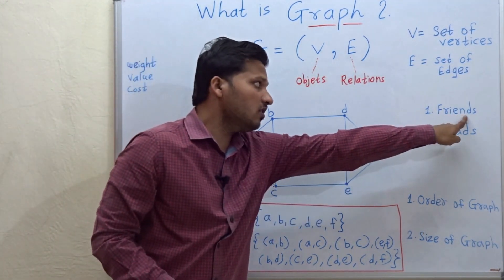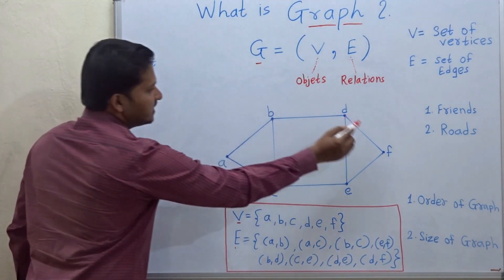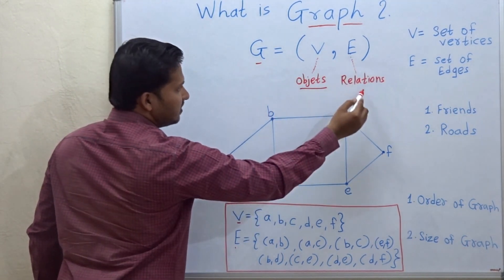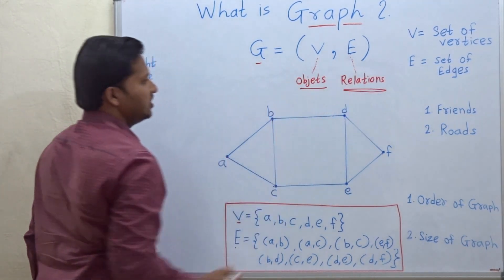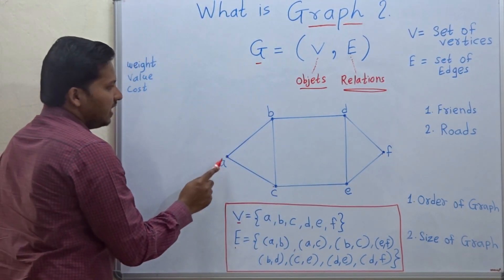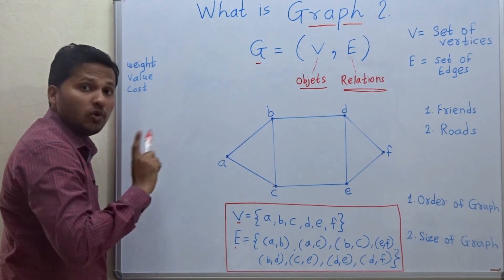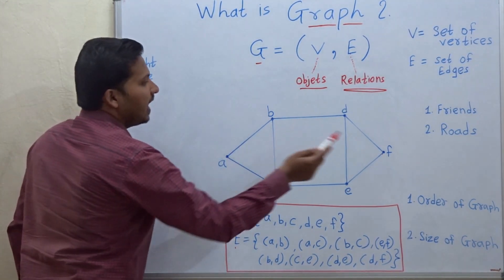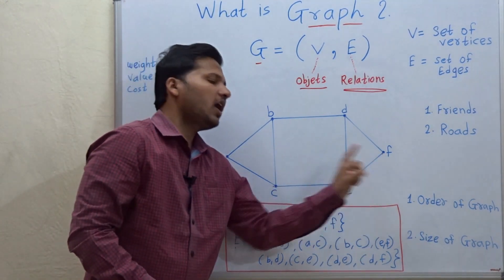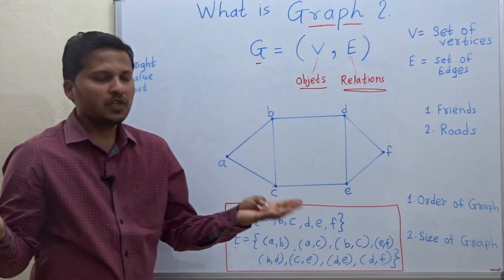The example is for friends relation means these vertices are the objects and the edges in those vertices are the relations. So friendship is a relation. So person a and person b are friends but there is no edge between a and f. So that means a and f are not direct friends or you can say they are not friends.